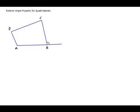So the exterior angle is formed when you extend the straight line. The interior angle is the one which lies inside, and the exterior angle is basically the outside angle. So to clearly indicate: this angle is interior, and the one which is outside is exterior.